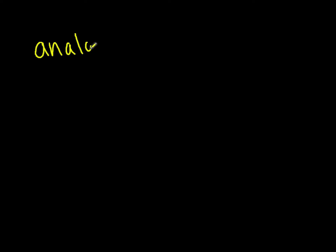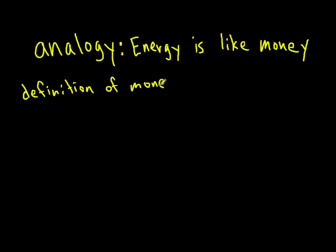In previous videos, we developed an analogy for energy. Using energy is like money to help us understand the abstract concept, which is energy. When we looked at this analogy, we looked at the definition of money as the ability to buy stuff. It's not a great definition, but it's hard to define money, and perhaps defining it based on what it's used for helps it to be more understandable.